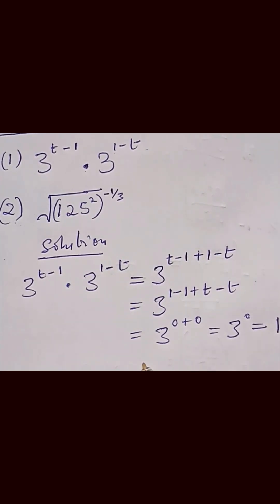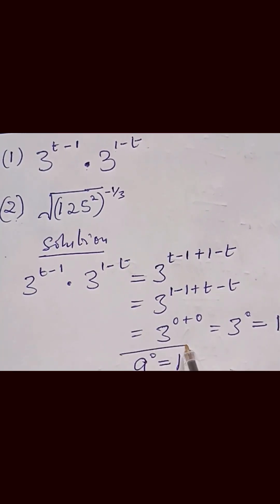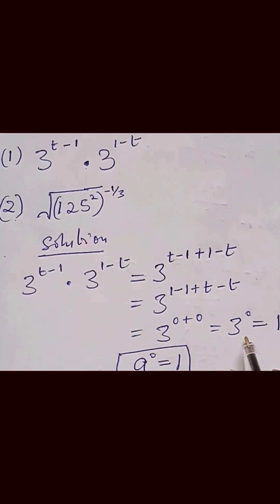Why? Because the rule of exponents gives us base a raised to the power 0 equals 1. So from this identity, our answer is equal to 1.